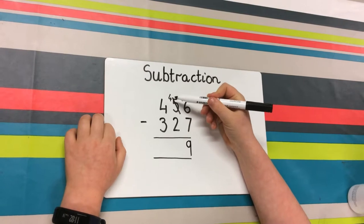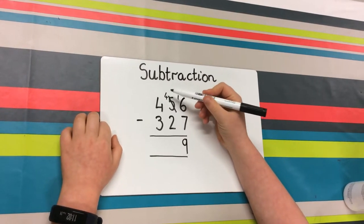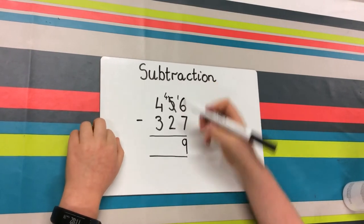Next, you have your 4, which is turned from the 5 and taking 1 out of that. So 4 minus 2 is 2.